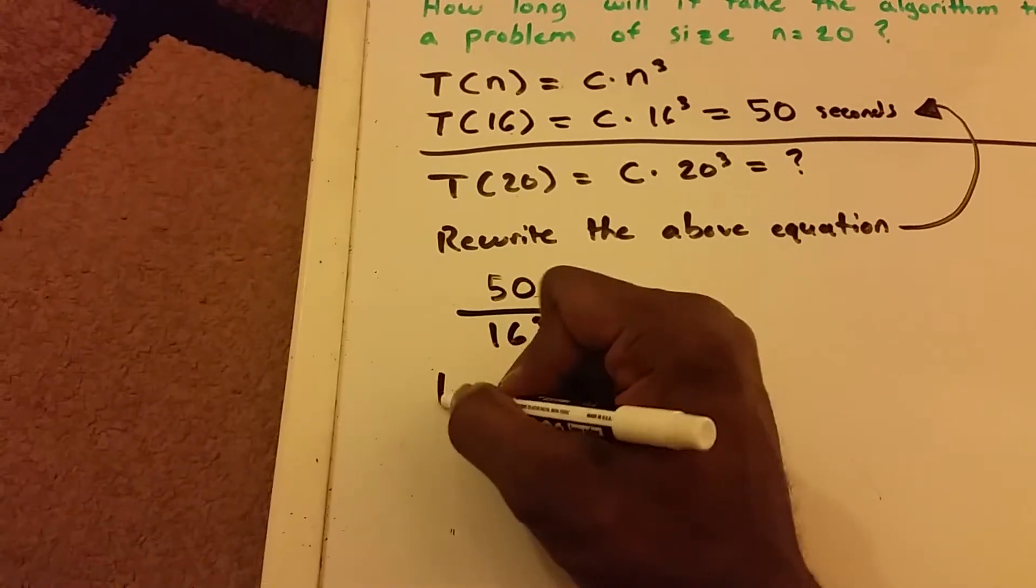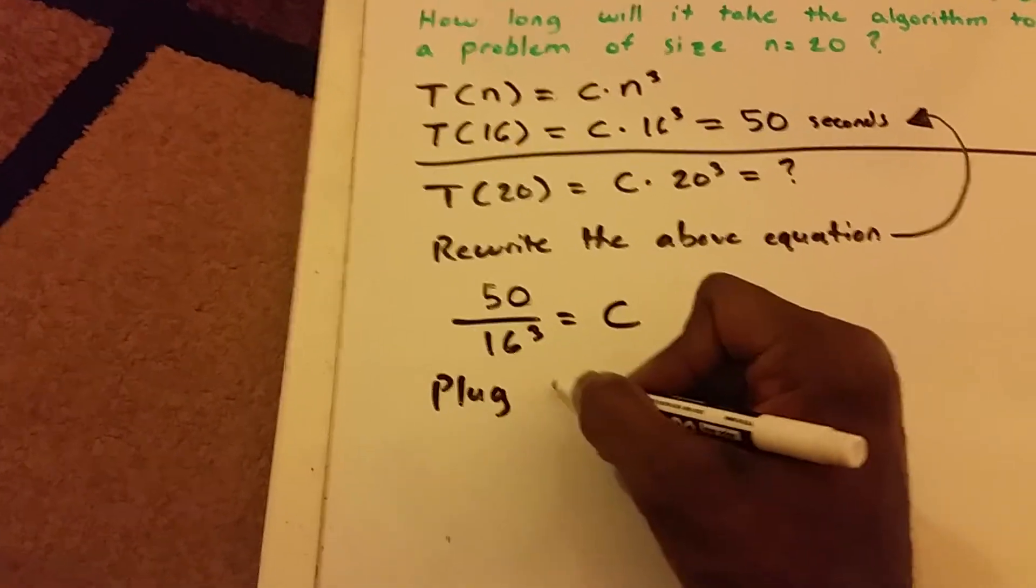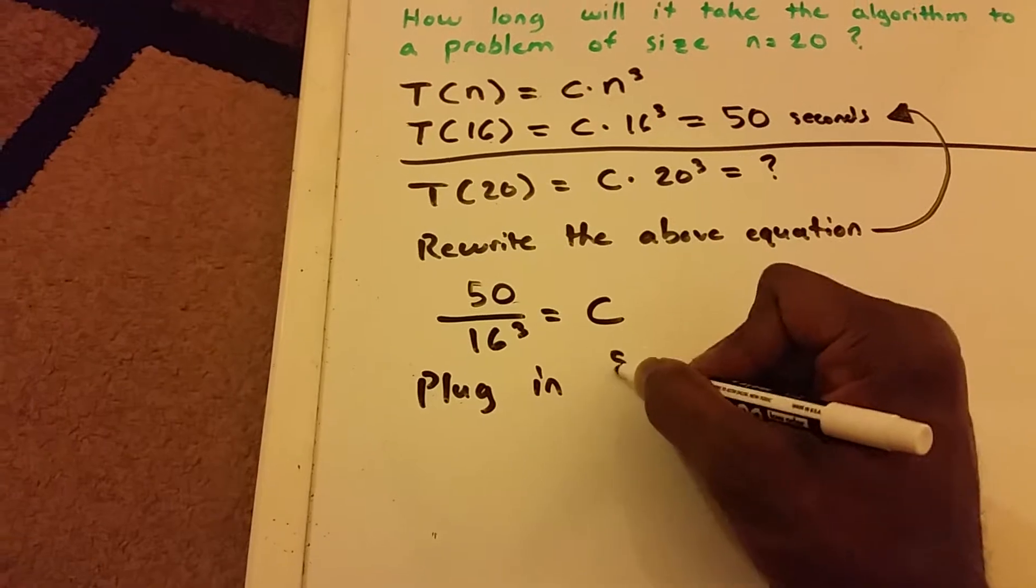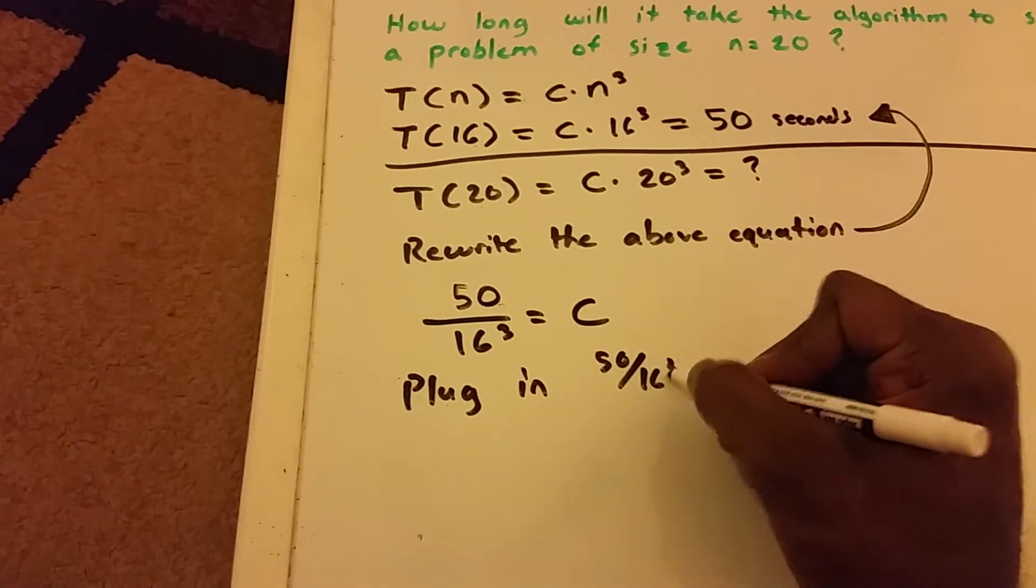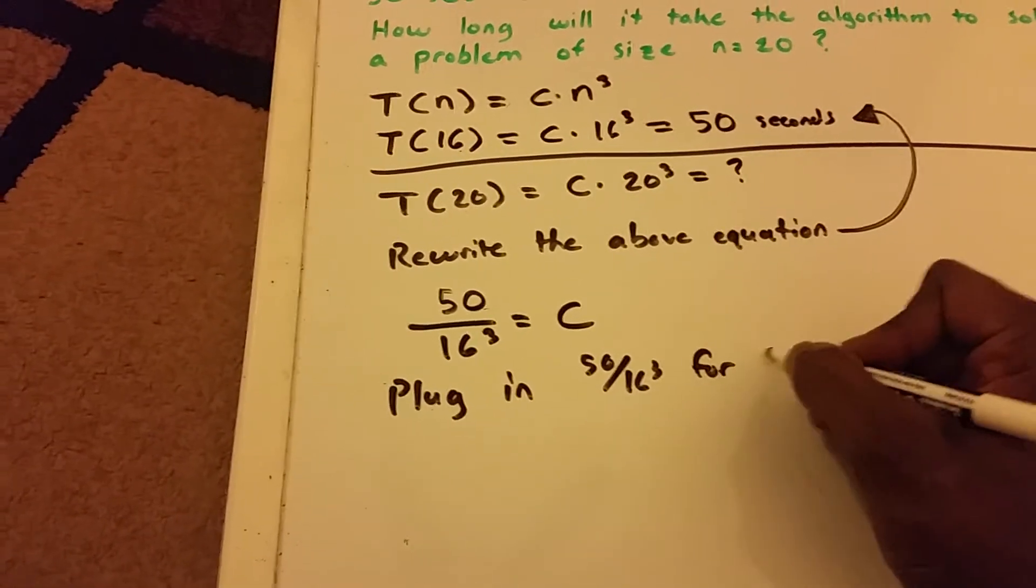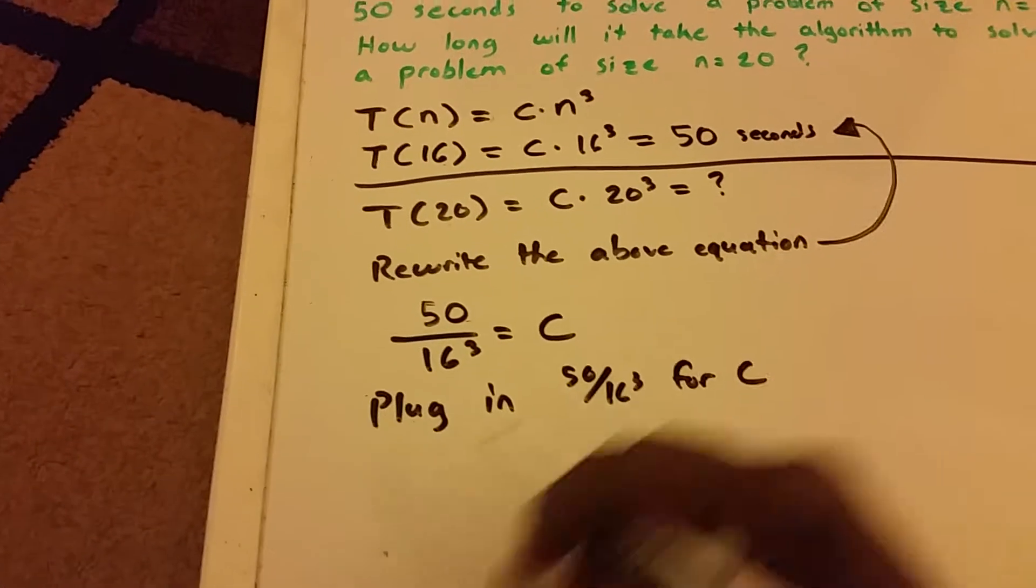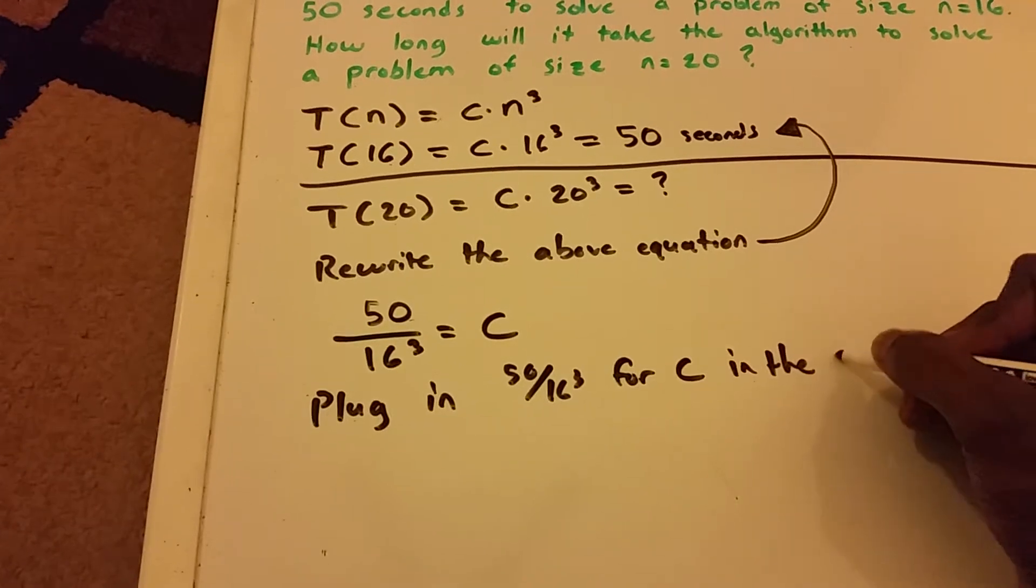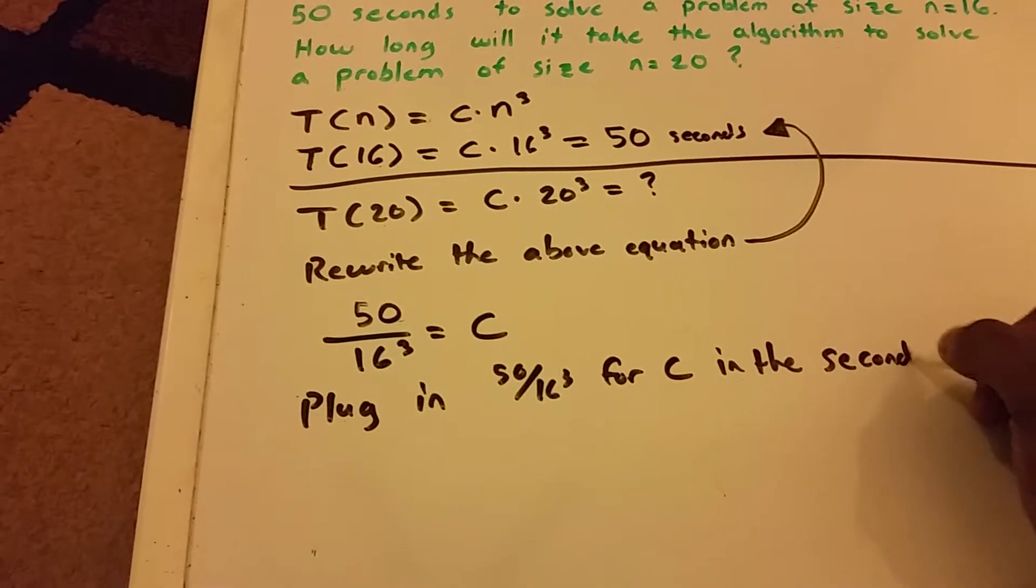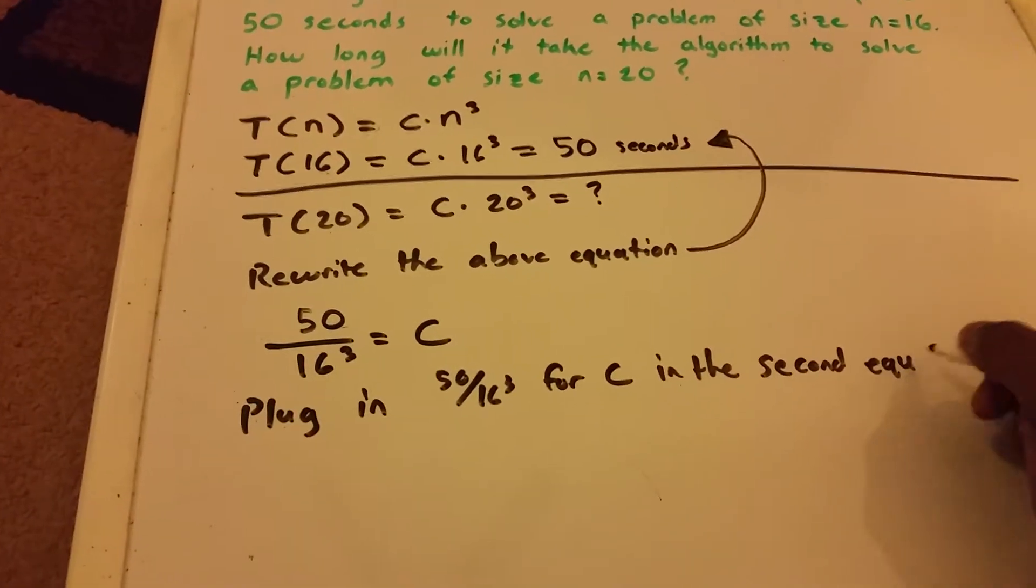And now we're going to plug in 50 over 16 cubed for C in the second equation.